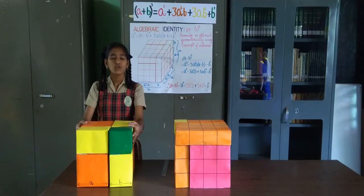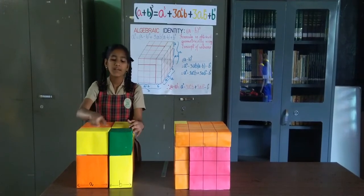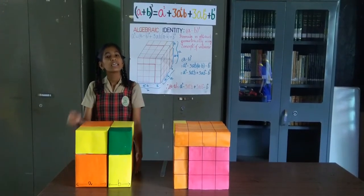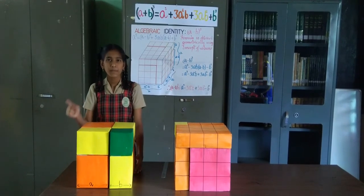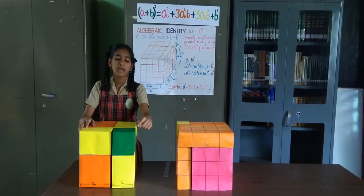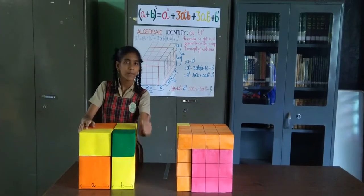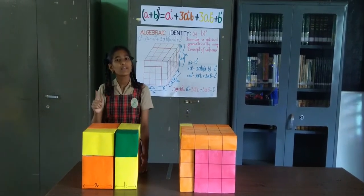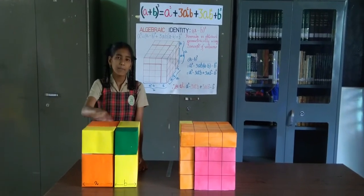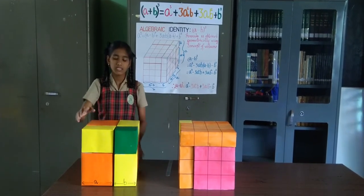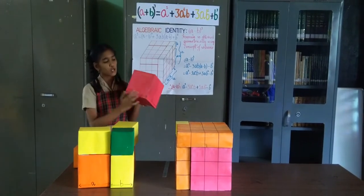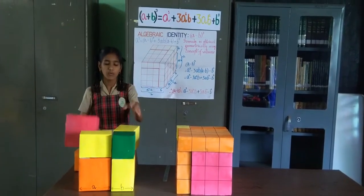In this model of cube, all sides are A plus B units. So the volume is side multiplied by side multiplied by side — that is A plus B multiplied by A plus B multiplied by A plus B, that is A plus B the whole cube. This cube of side A plus B units is made up of a cube of side A units, so its volume is A cube.